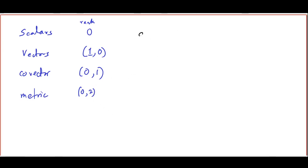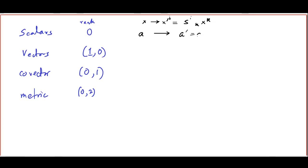Scalars are things which simply don't transform. They are described by one single number with no indices. When you go over to a new coordinate system — a coordinate system given by x^i going to x'^i equals S^i_k x^k — a simply goes over to a' equals a, no change whatsoever. No indices and no factor of the coordinate transformation matrix to pick up, which goes very well with rank 0.